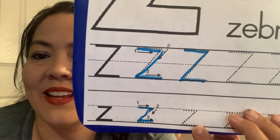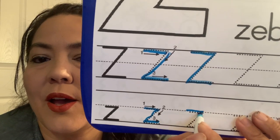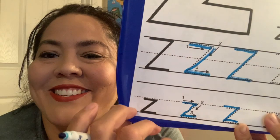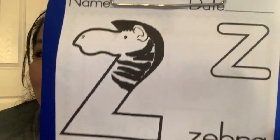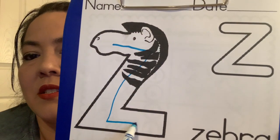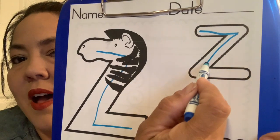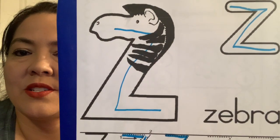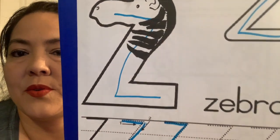Just like that. Can you guys try that? Across the top, down the slide, and across the bottom. Awesome, good job guys. Okay, and then you guys can come up here and trace Z — go across the top, down the slide, and across the bottom. You can also practice your Z's up here with the big Z and the uppercase and lowercase Z.